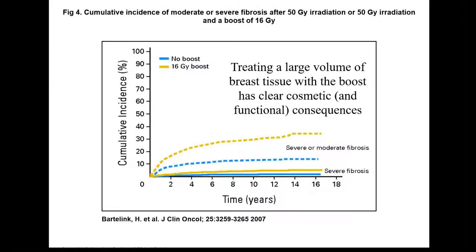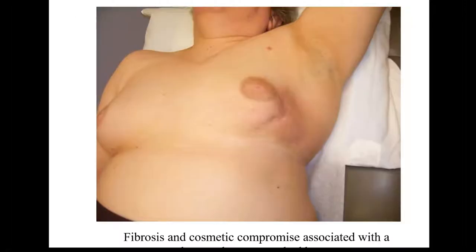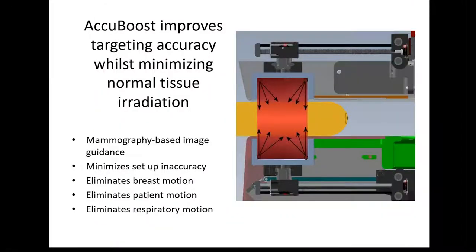As we escalate dose to the breast with boost, there is a consequence related to late cosmetic and functional toxicity — typically breast fibrosis. As an example, an electron boost patient to the lateral breast shows hyperpigmentation and significant subcutaneous fibrosis.